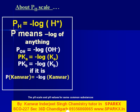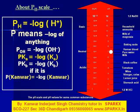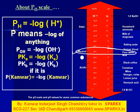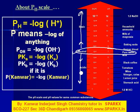In the pH scale, values with a pH of 7 are neutral. Values less than 7 are acidic, and values more than 7 are basic. The further you go from 7 — either towards acid or base — the more acidic or basic they will be. The closer you come to 7, the more dilute and less acidic or basic they will be.